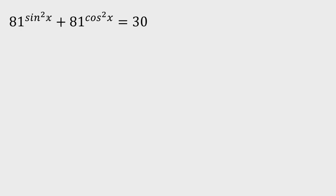81 to the power of sine squared x plus 81 to the power of cosine squared x equals 30.